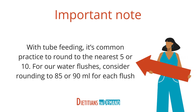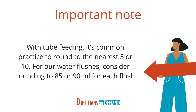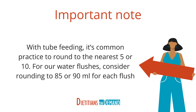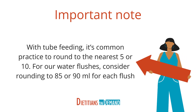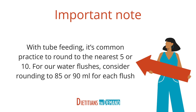With tube feeding, it's common practice to round to the nearest five or ten. For our water flushes, consider rounding to 85 or 90 milliliters for each flush. This will make it easier for the nurses.